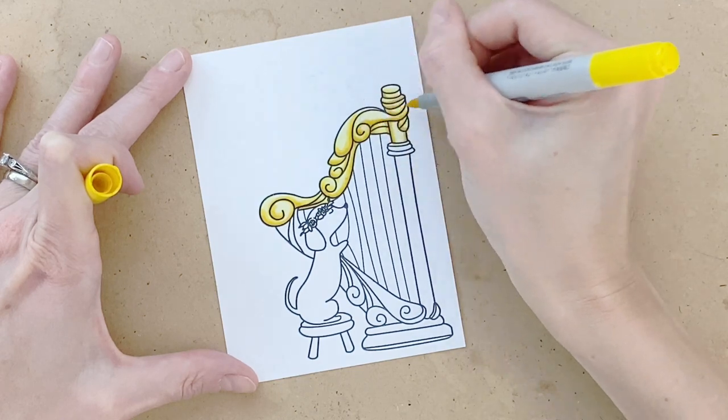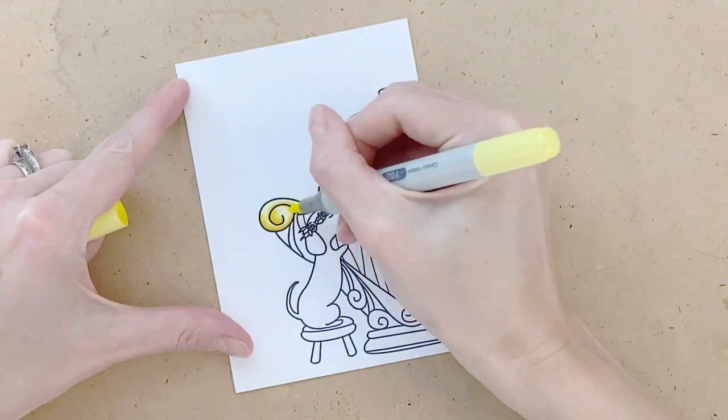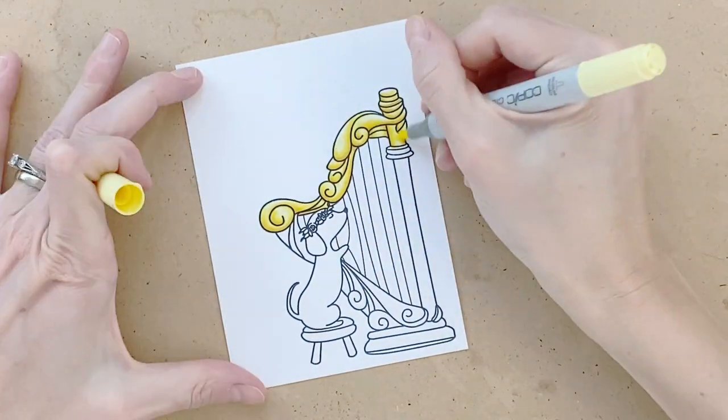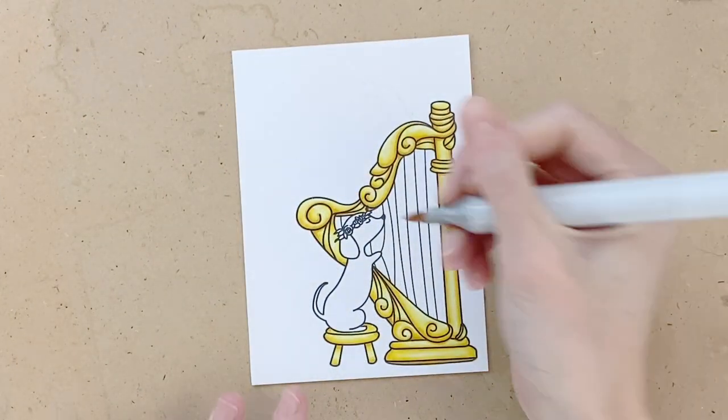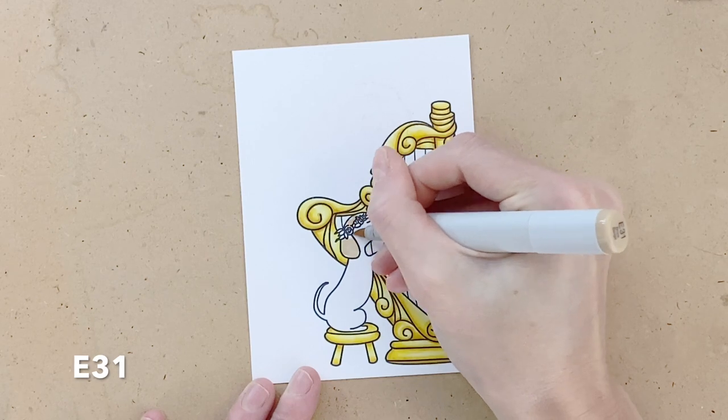Once I've gone through all my shades I'm going to work my way back through. So here I'm at Y15 now I'm doing Y02 and then I'll finish with Y11. Once I finish that I'm going to color the rest of it off camera and now of course I'm going to move on to the puppy.